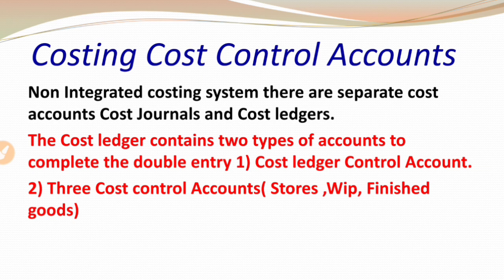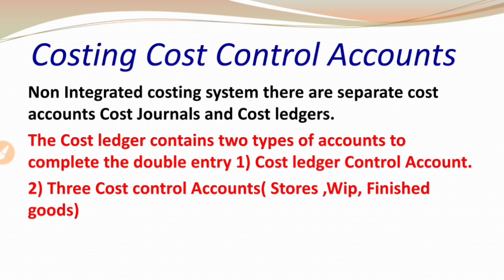Number one is the cost ledger control account, and number two is three cost control accounts called stores, WIP, and finished goods. In a non-integrated system, when a financial accountant passes any entry — like assets purchased or expenses paid — we pass a simple entry: expenses account debit to bank. But in a non-integrated system, wherever bank appears, we substitute it with cost control account. So the entry becomes: expenses account debit to cost control account. We maintain three separate ledgers: stores, work in progress, and finished goods.